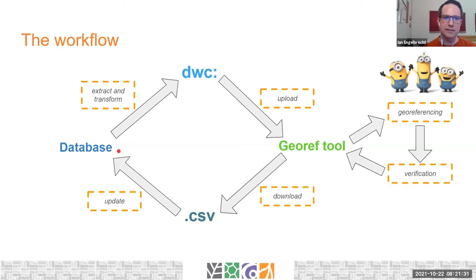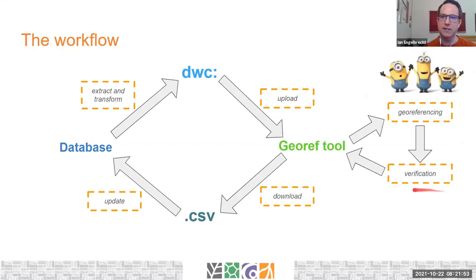The workflow is fairly standard: extract the data from your database, transform it to Darwin Core — only a handful of fields need to be Darwin Core fields — then upload it to the geo-referencing tool. Do your geo-referencing in the tool; it's always helpful to have team members helping. There's a verification stage in the tool where you can check everything. When the dataset is done — we typically only reach about 80 to 90 percent, with the rest being non-geo-referenceable — you download the data and update your database.